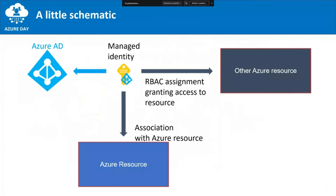In the Azure landscape, in the middle you have this Managed Identity — it exists as an object in Azure AD and is associated with an Azure resource. This identity, bound to your Azure resource, is then granted a role through RBAC assignment in Azure to other resources. For example, a managed identity associated with a virtual machine could be granted read access on a Key Vault, with a corresponding access policy.